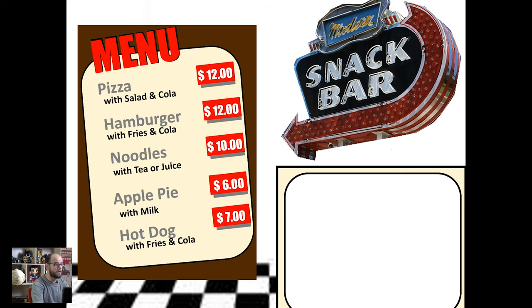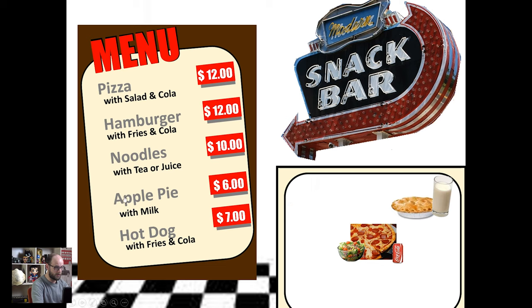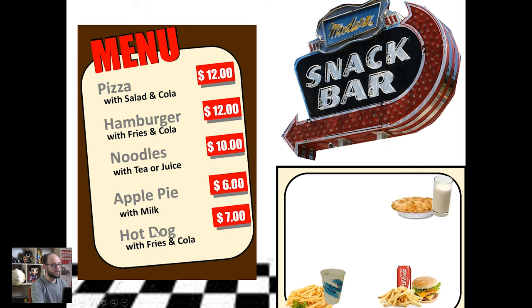Slide twelve is great for teaching how to order food or doing restaurant role play. Get the students to role play as waiter and customer: 'May I take your order please?' 'Yes, I'll have a pizza, a salad, and a cola.' Click the pizza and the pizza appears. 'Would you like anything else, sir?' 'I'll have an apple pie with milk, a hot dog, fries, and a cola. That'll be 25 dollars please.' You can remove the pictures by clicking on the words again. You can change the pictures but you have to make sure that the buttons match the pictures.